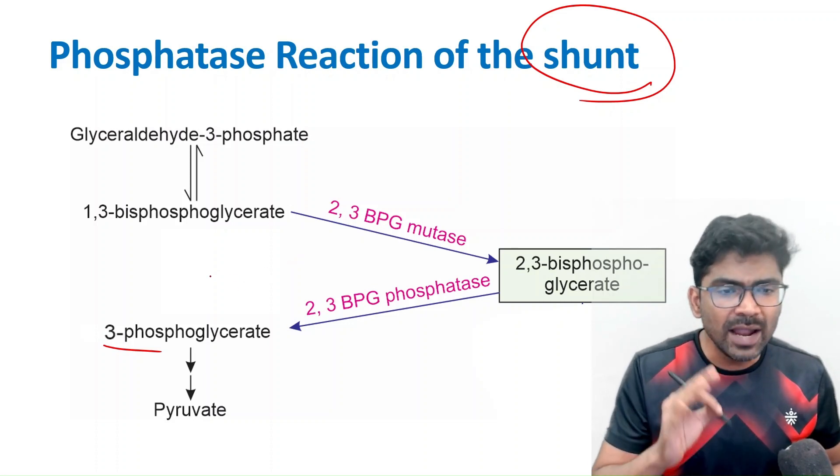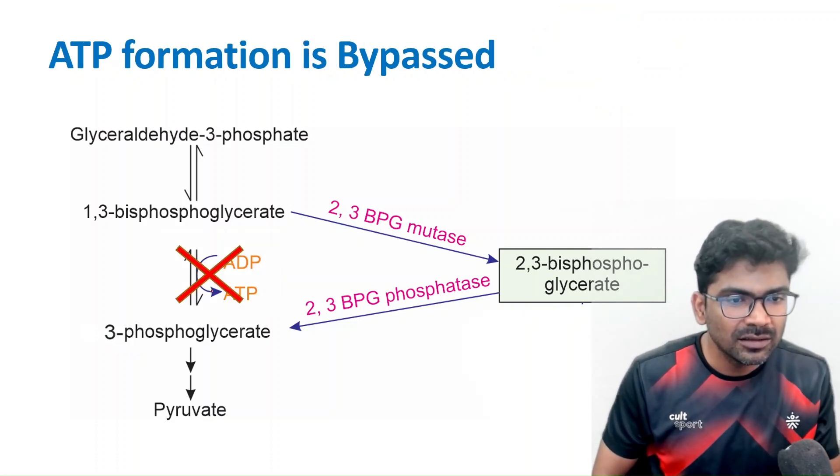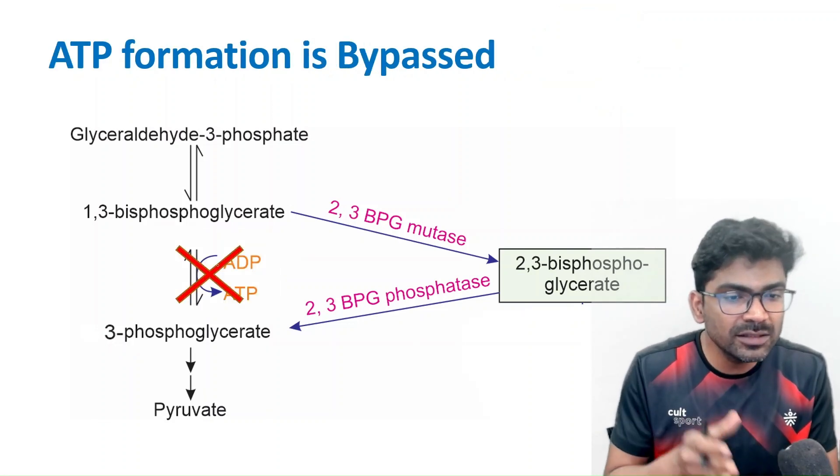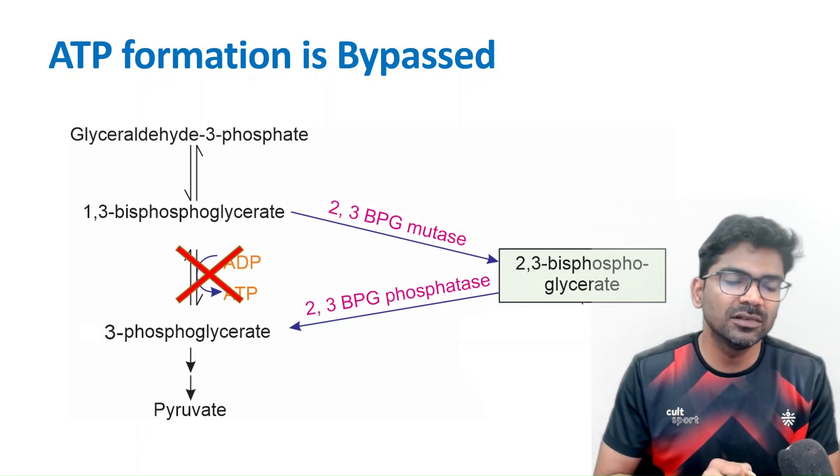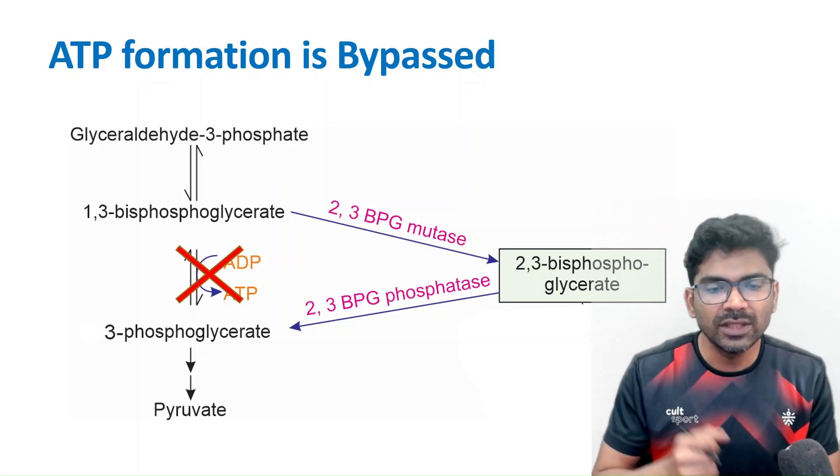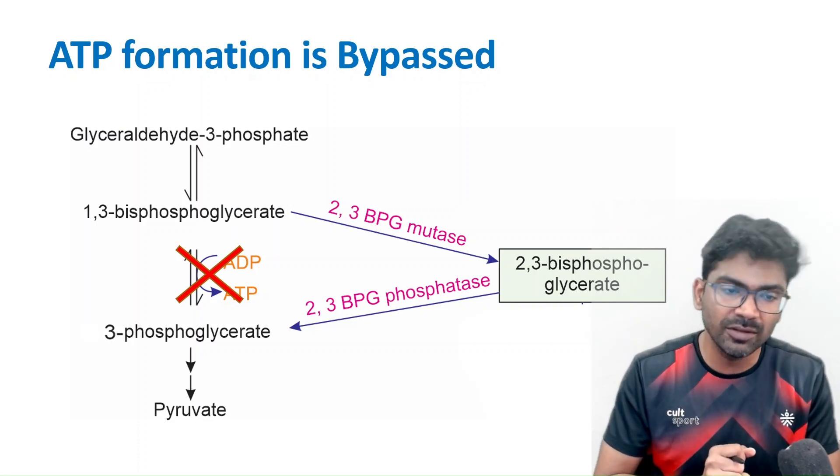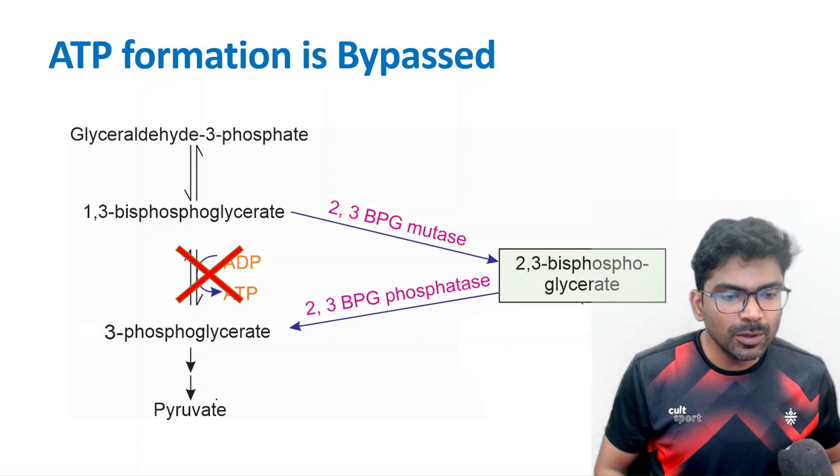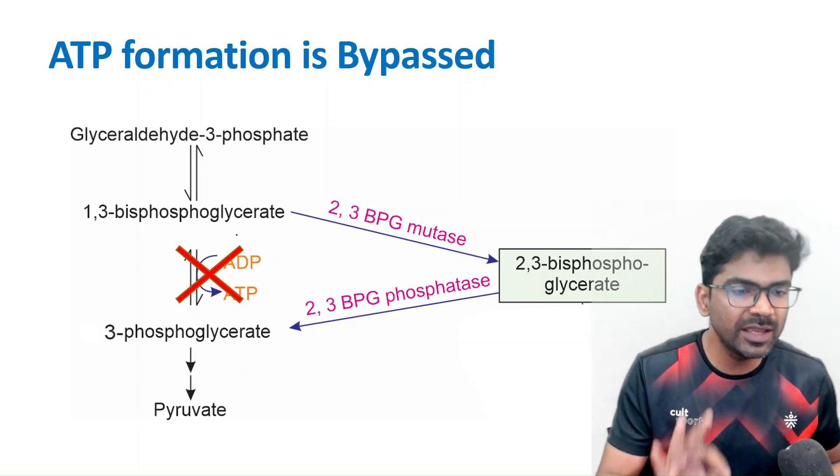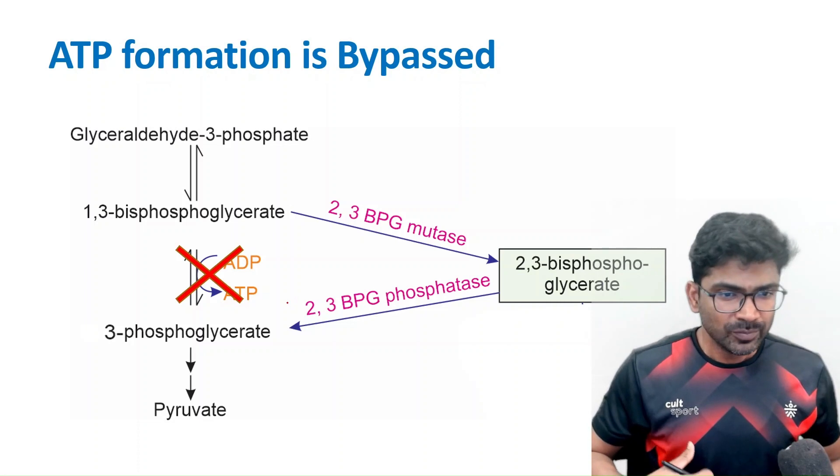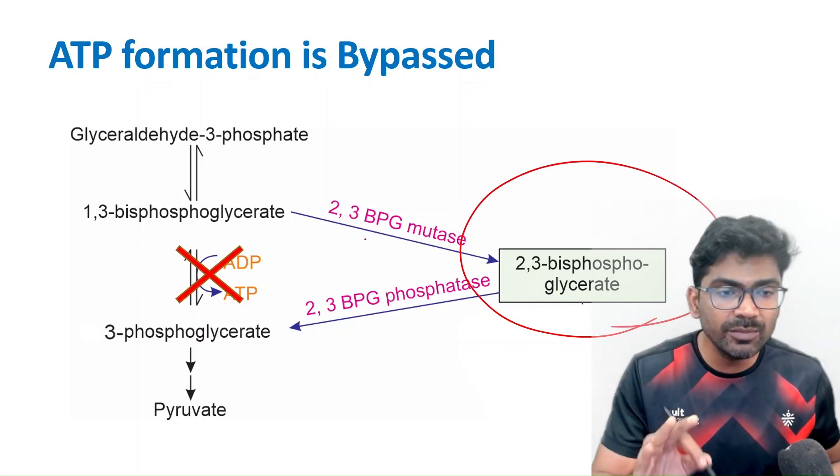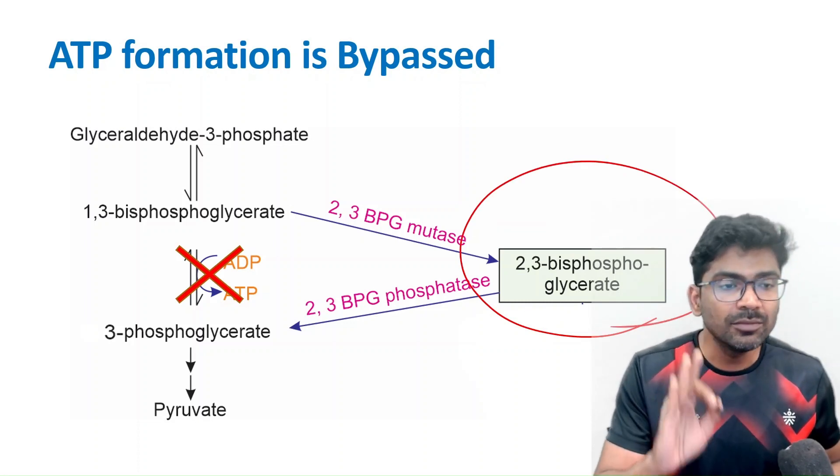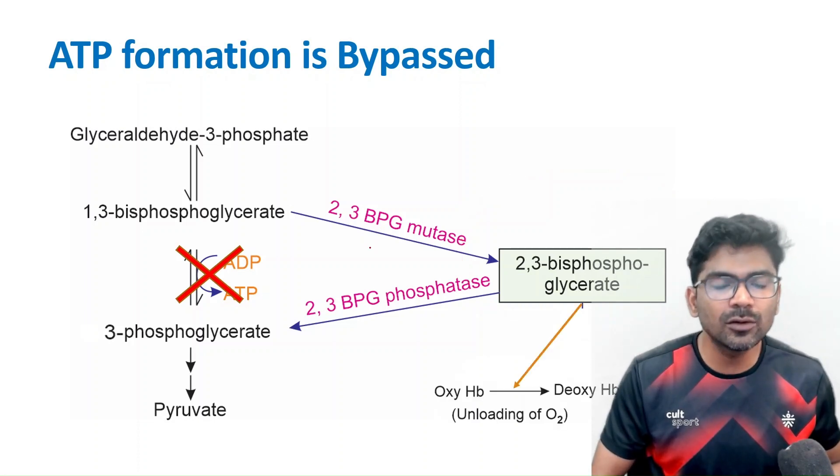Now, there is a matter of concern here. What has happened? The substrate level phosphorylation reaction has been skipped, so there is no generation of ATP in this reaction. There is loss of ATP because of this shunt pathway. There is one more ATP produced by the pyruvate kinase step that is happening. Only one of the substrate level phosphorylations is affected by this shunt pathway. So nature is compromising on ATP for production of this molecule 2,3-BPG. That means this molecule is something very useful.